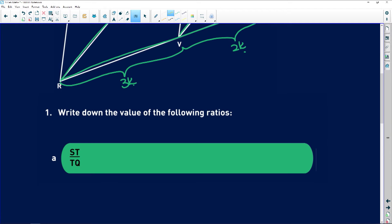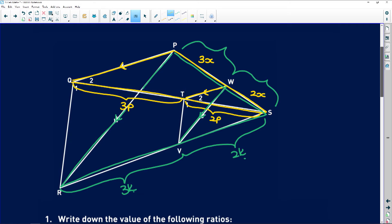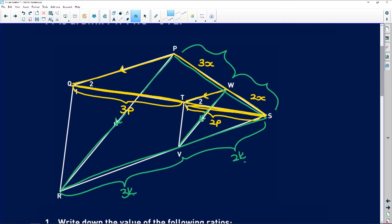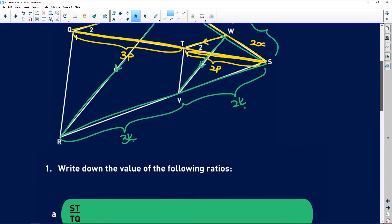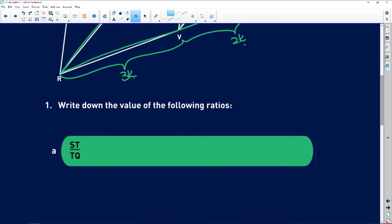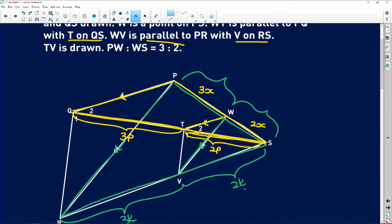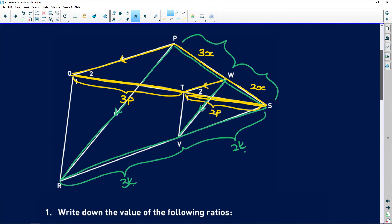So now it says question 1. Write down the value of the following ratios. ST to TQ. So let's take a look here. ST is part of the yellow triangle. So it's over here. And TQ is over there. So now if you filled in your diagram you know that ST to TQ is 2 to 3. Same as that initial. This gave us the yardstick by which we can measure all the other ratios.